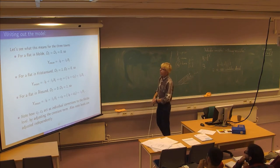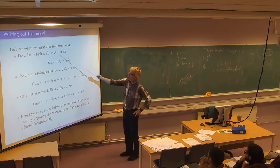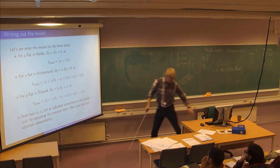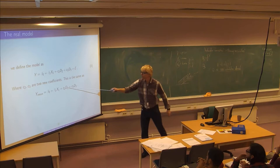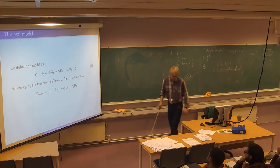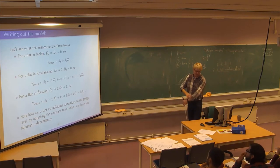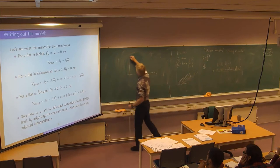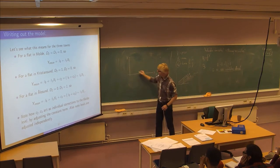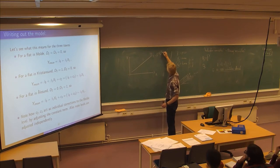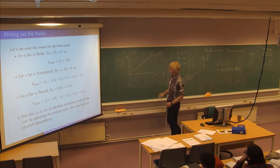What does this model say if my flat is in Molde? Well, the indicators for Kristiansund and Ålesund would be zero, so inserting zero here and zero here, you remain with the basic linear relationship on floor space area. The model describes a particular line: y equals beta zero plus beta one times x1.